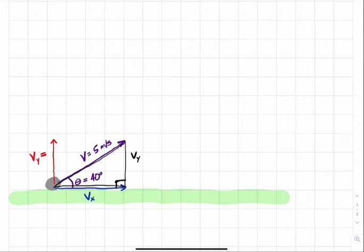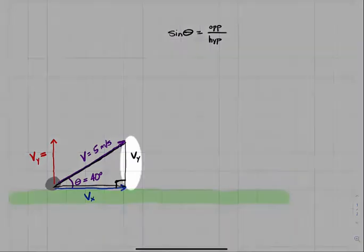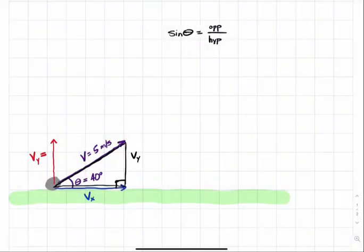One of those functions says sine theta equals the opposite side over the hypotenuse. Remember, the hypotenuse is the largest side of the right triangle and is always located opposite to the right angle. And the opposite side of this right triangle is Vy. So to calculate velocity in the y direction, I would use the sine function.